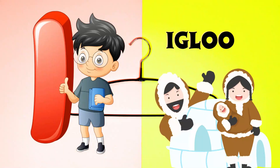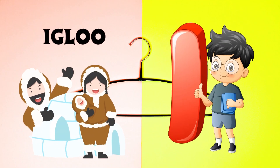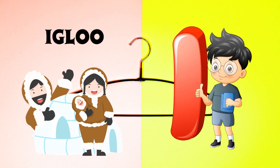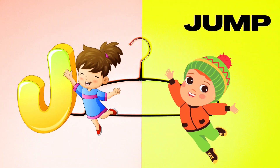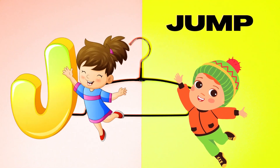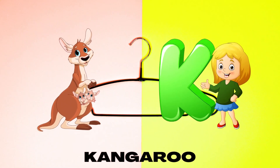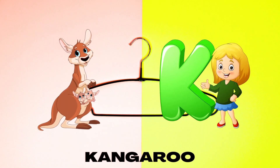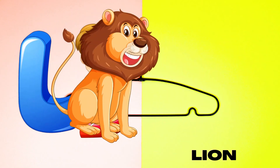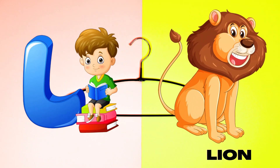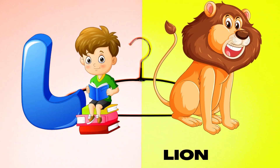I is for Igloo, I-I-Igloo. J is for Jump, J-J-Jump. K is for Kangaroo, K-K-Kangaroo. L is for Lion, L-L-Lion.